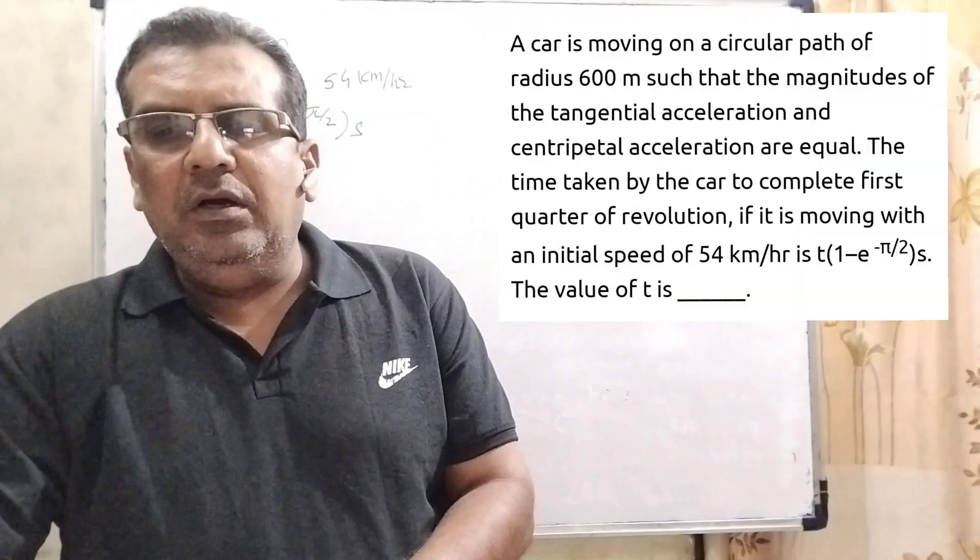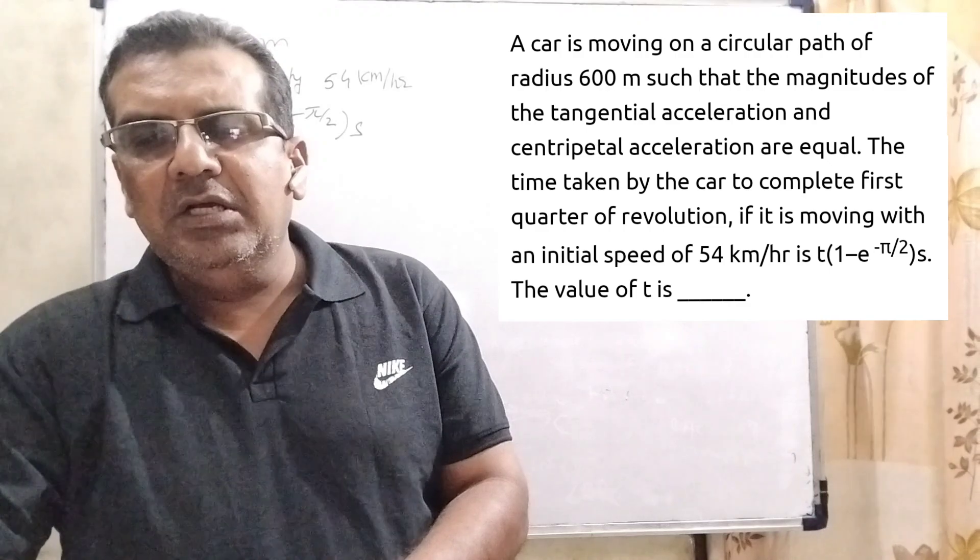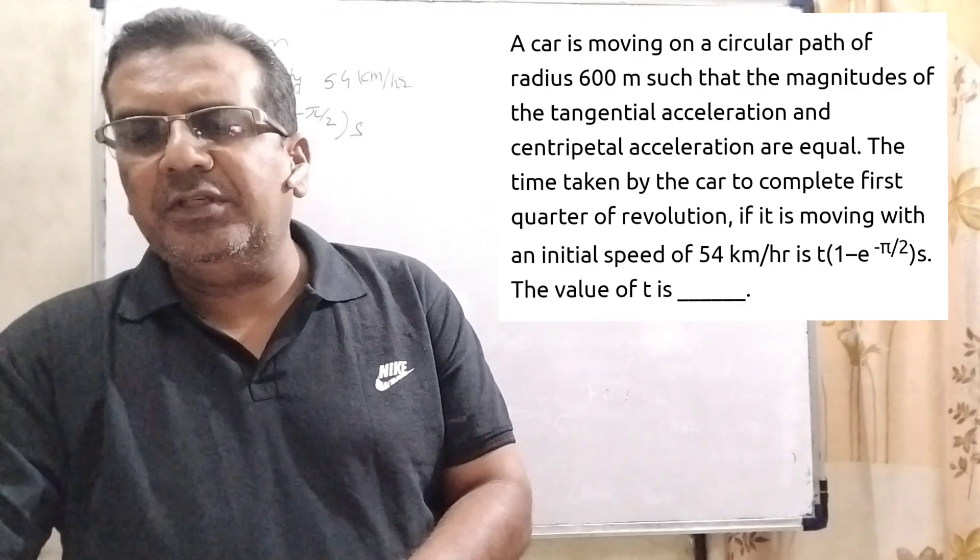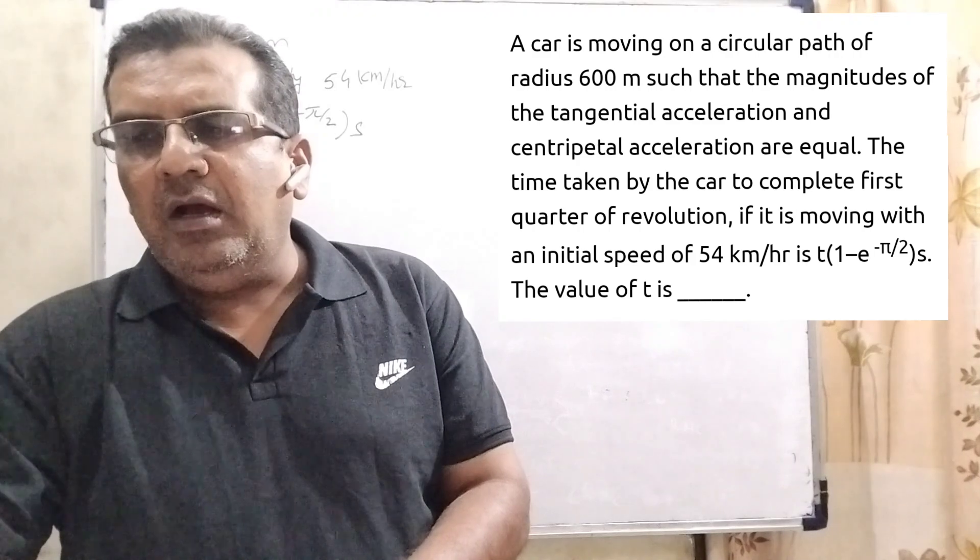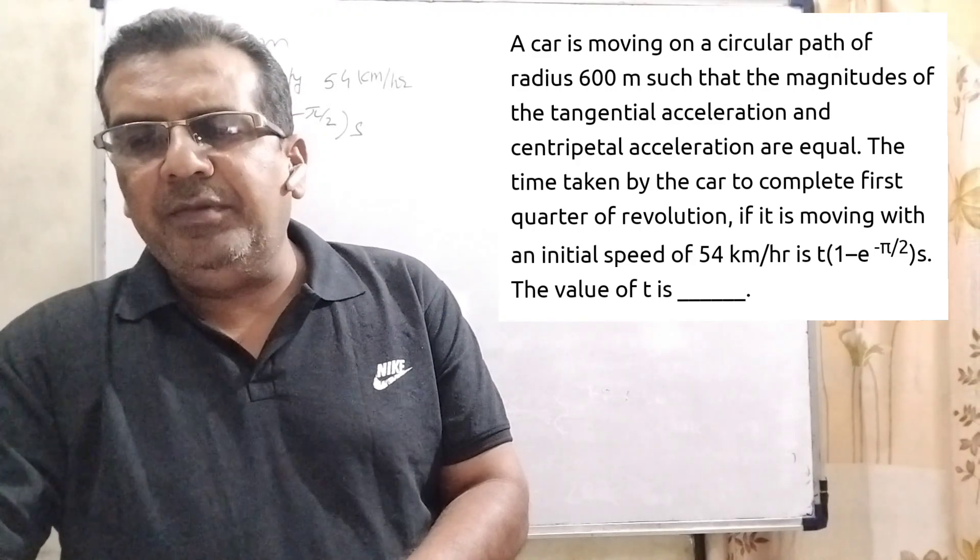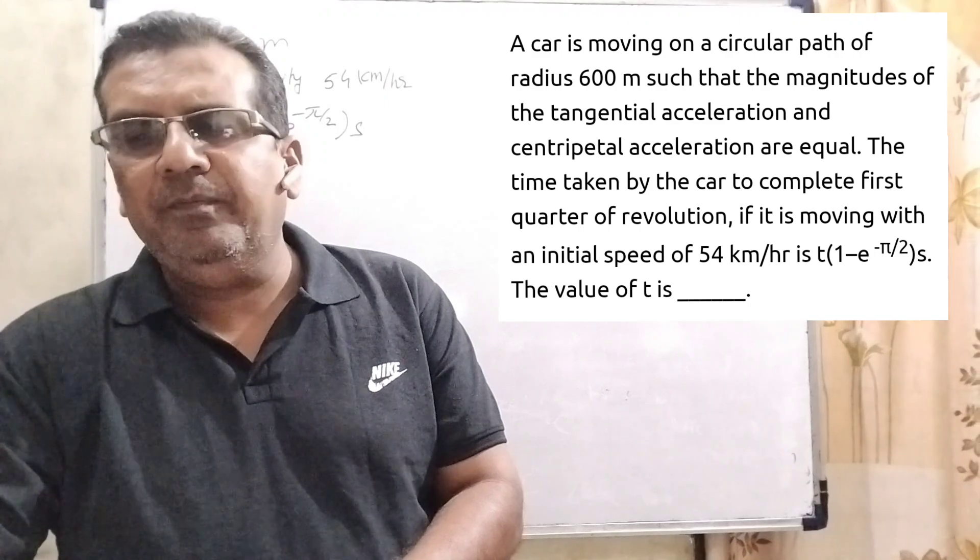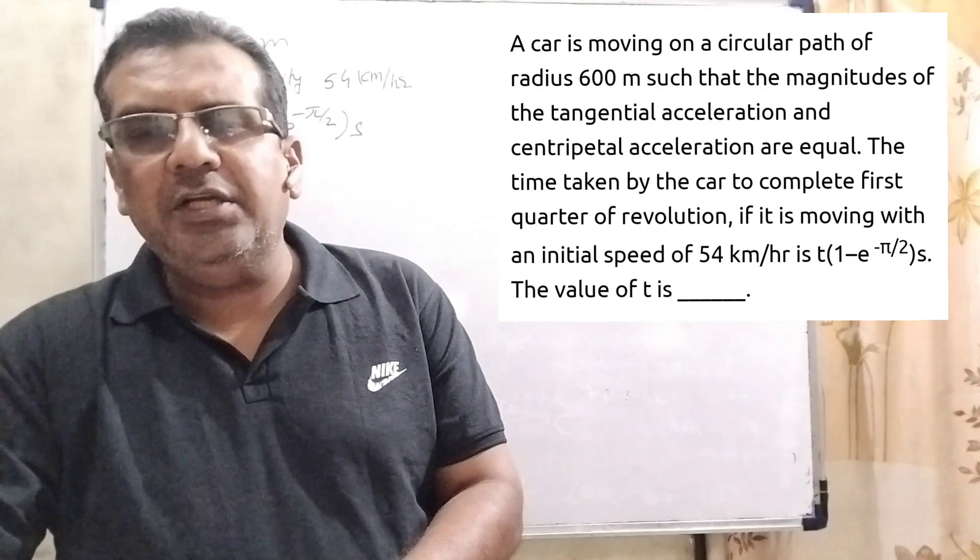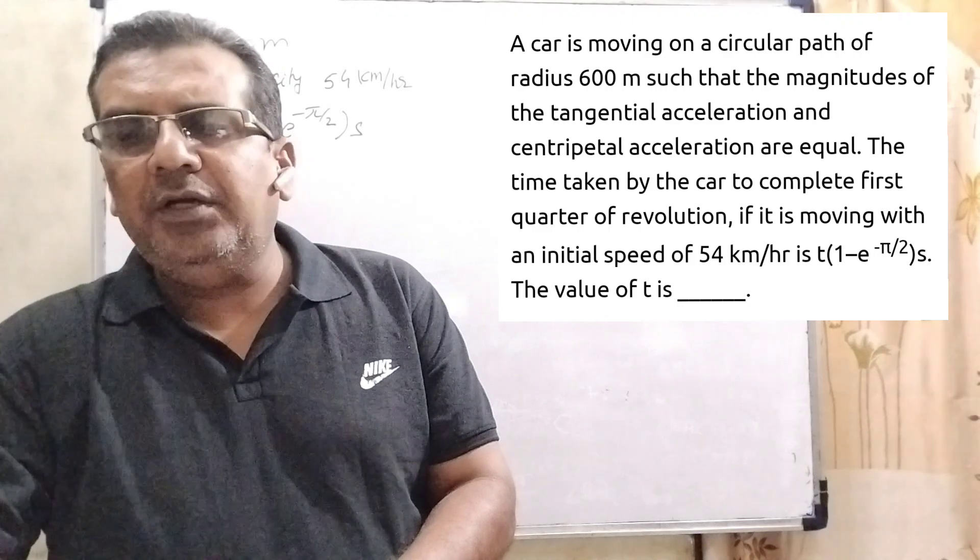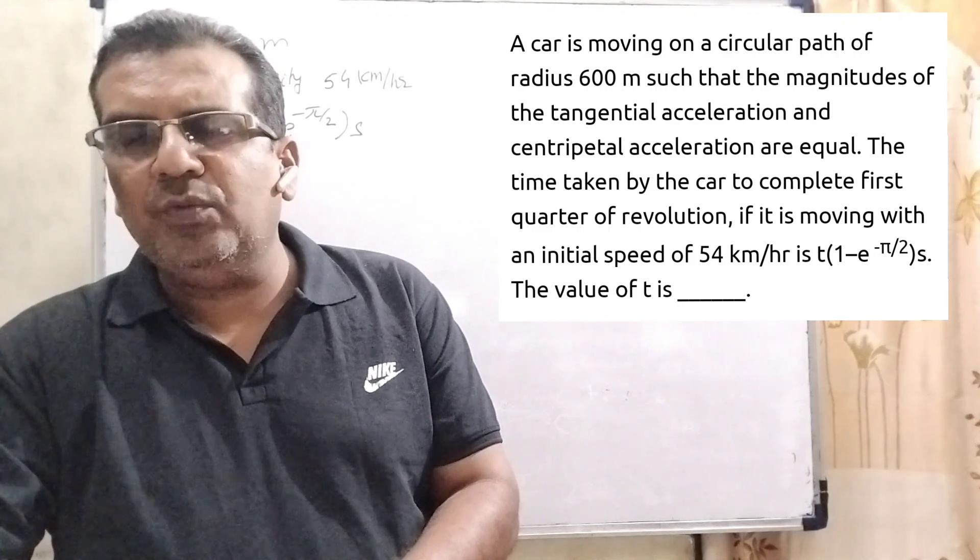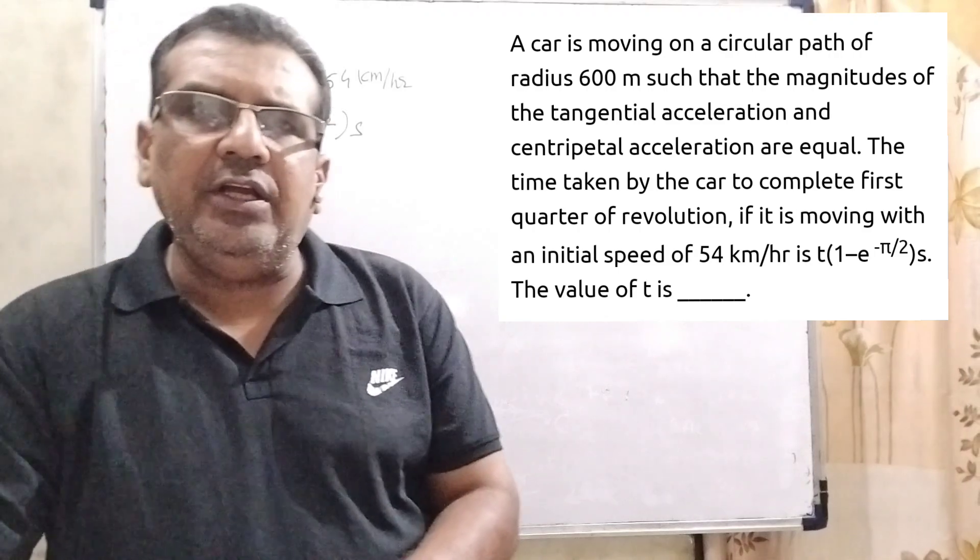Now, here is the question. A car is moving on a circular path of radius 600 meters such that the magnitude of the tangential acceleration and centripetal acceleration are equal. The time taken by the car to complete the first quarter of revolution, if it is moving with initial speed of 54 km per hour, is t(1 - e^(-π/2)) seconds. Find the value of t.